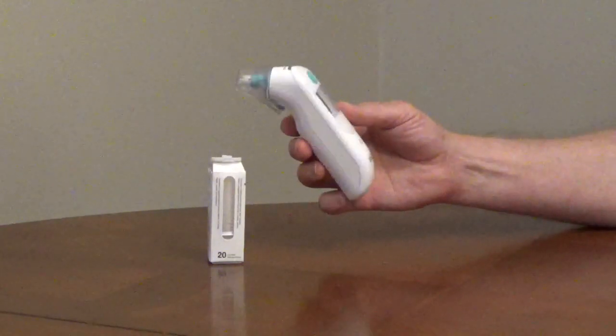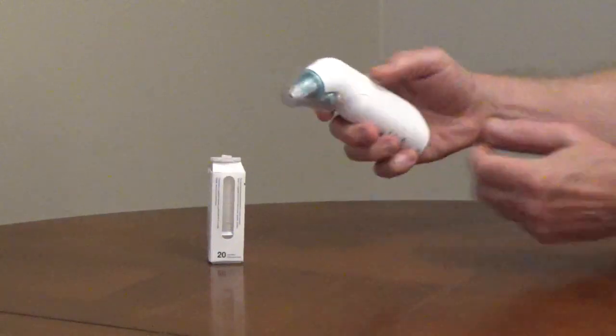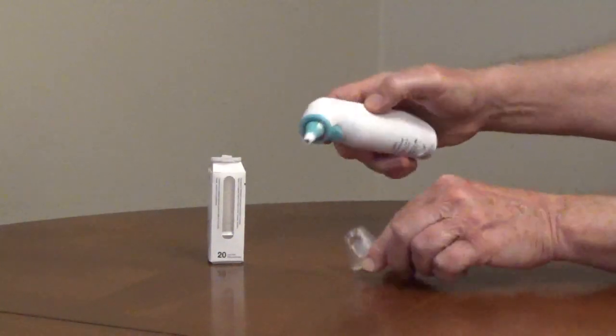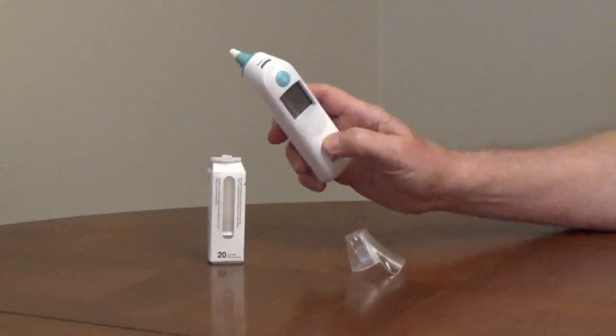It comes with disposable lens filters to cover the probe before each use, and a protective cap to protect the probe tip. To use it, remove the protective cap and push the power button.